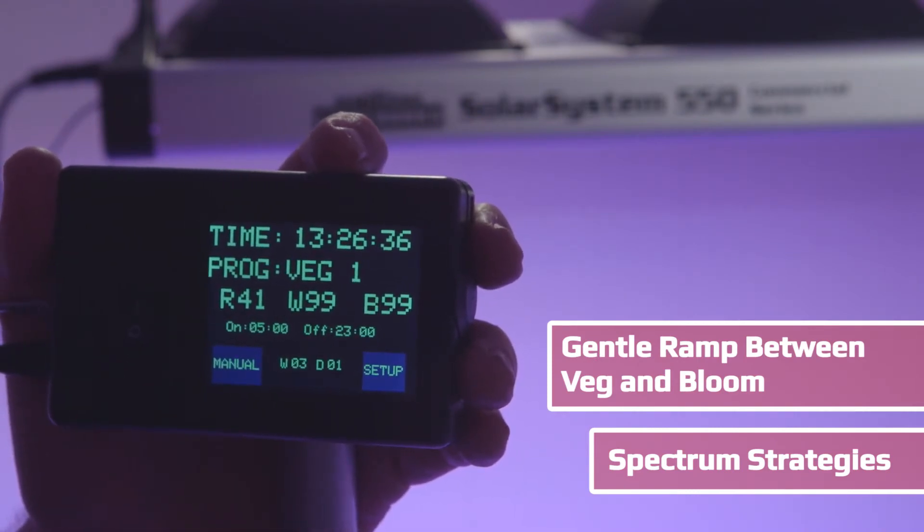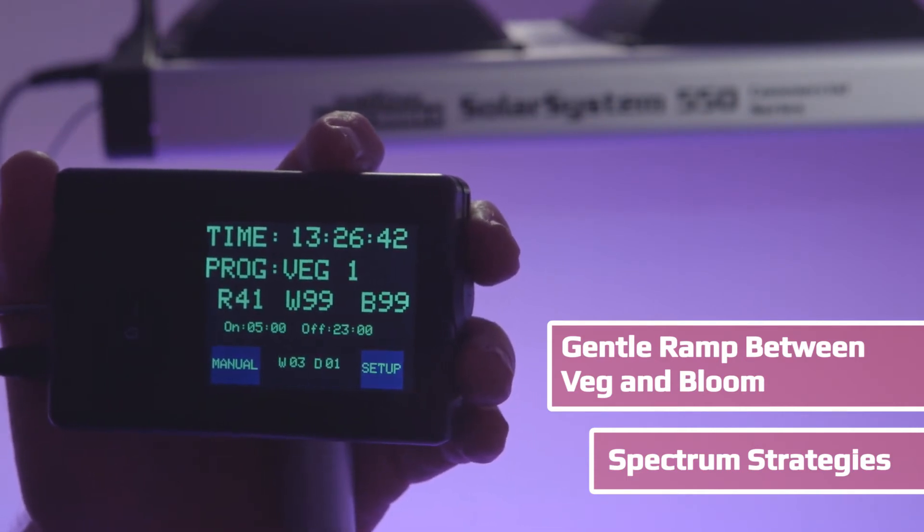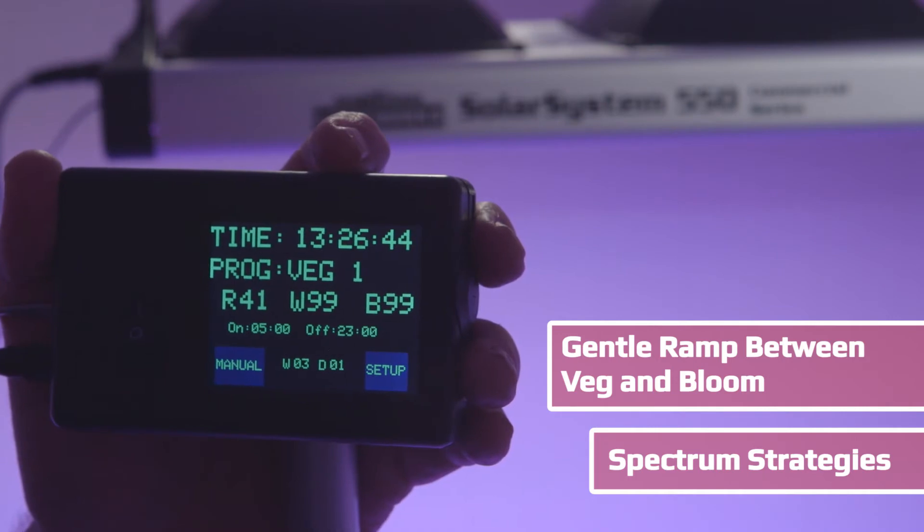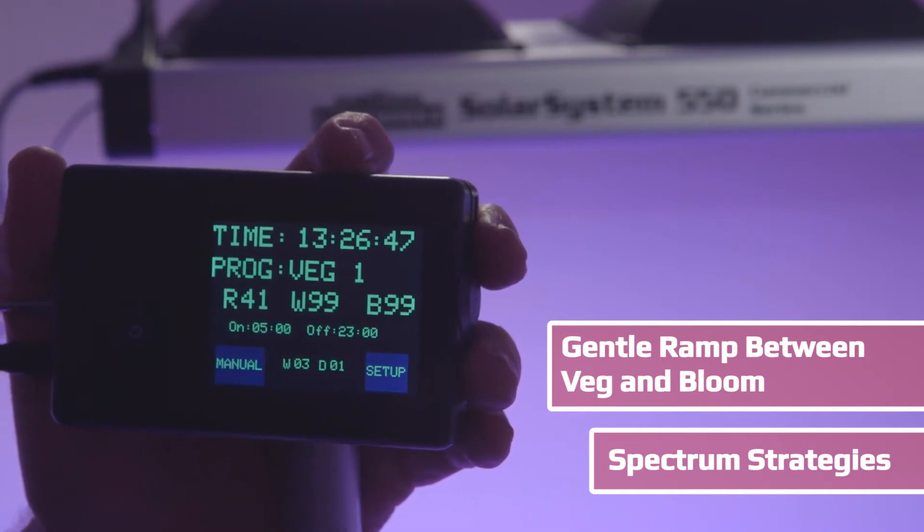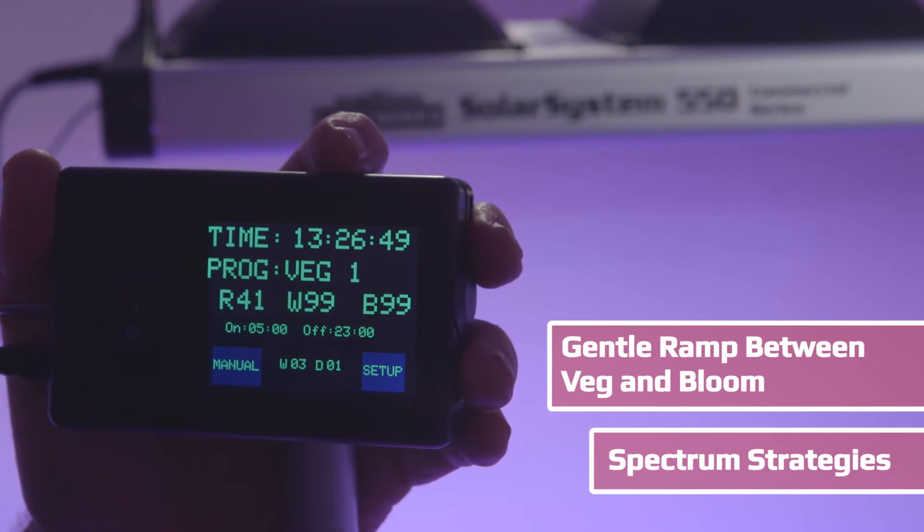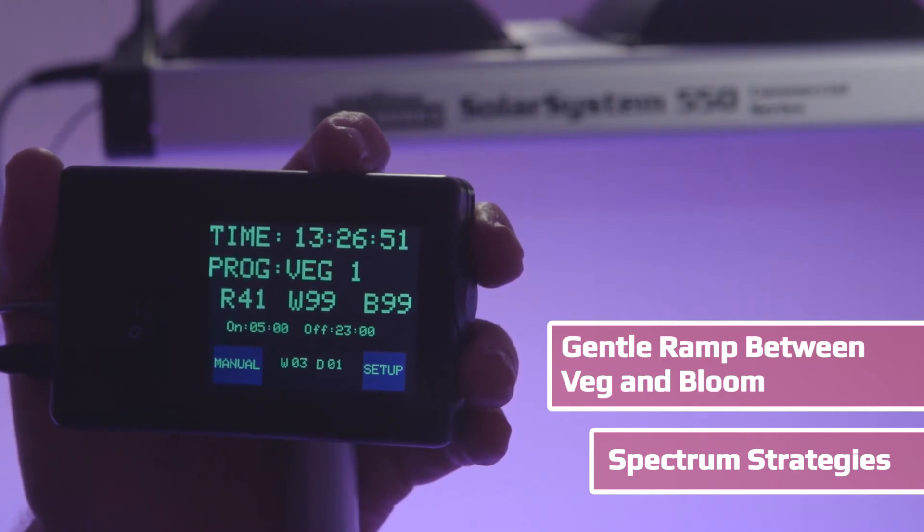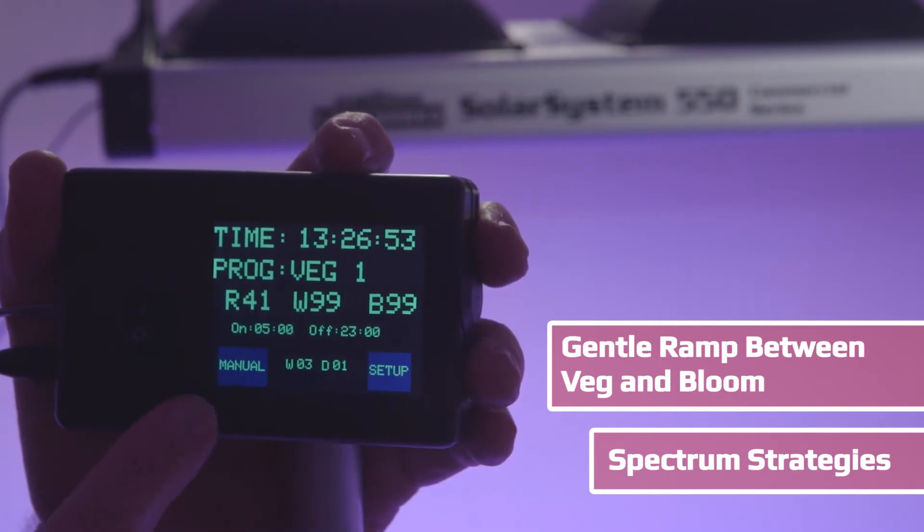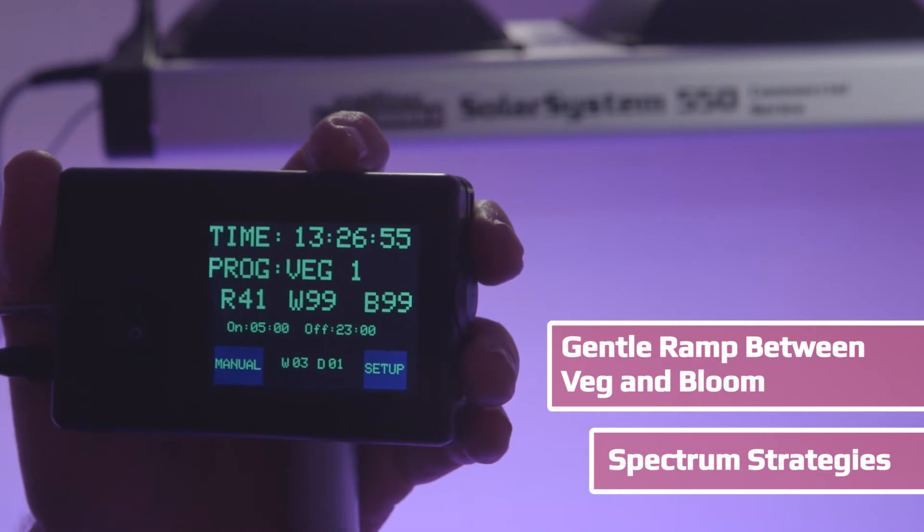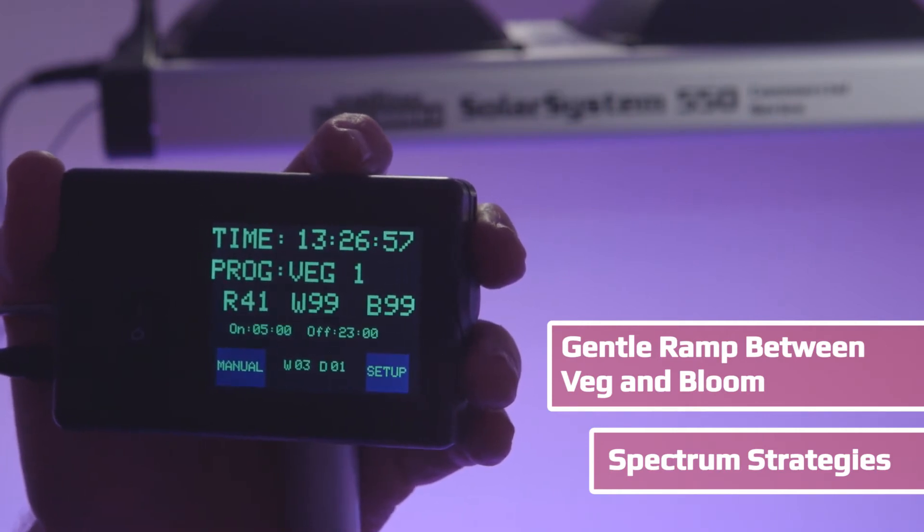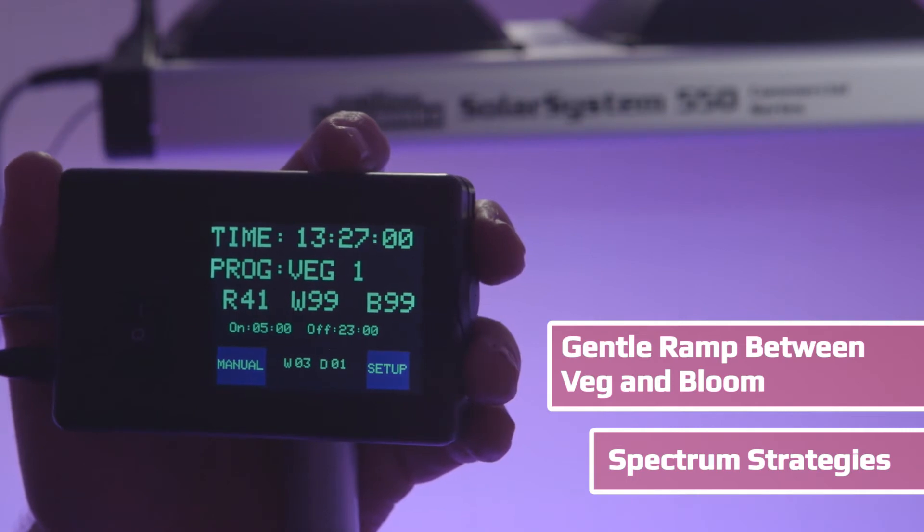There are also strategies about the light period. Most growers using fixed spectrum lights do 18-6 for several weeks then switch all at once to 12-12. With this controller, instead of switching abruptly to 12-12, you can do a gentle ramp between veg and bloom.